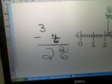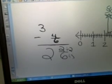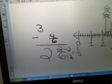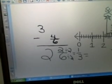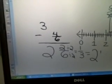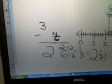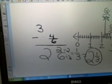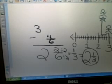Two-sixths can be reduced to one-third. So my final answer is two and one-third. This is how I wanted to demonstrate subtraction using a number line.